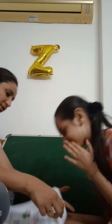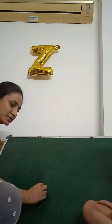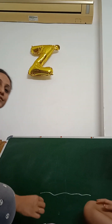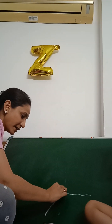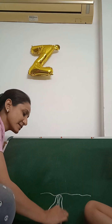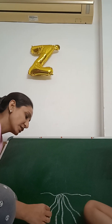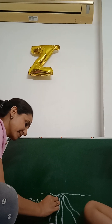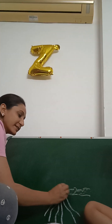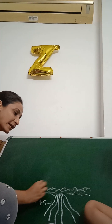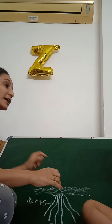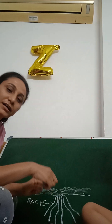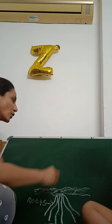So today we are going to learn the parts of plants. Students, this is our soil. Can you see what is this? Ziva, can you tell me what is this? Root. These are the roots. It is inside the soil. Can you see the roots, Ziva? No, we cannot see the roots — it is inside the soil.